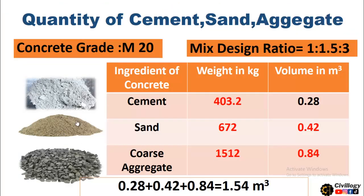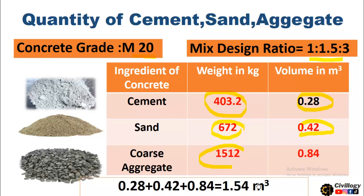At the end, let us summarize the whole topic. For M20 grade with ratio 1:1.5:3: cement is 403.2 kg with a volume of 0.28 cubic meters; sand is 672 kg with a volume of 0.42 cubic meters; and coarse aggregate is 1512 kg with a volume of 0.84 cubic meters. It depends on you whether you are calculating by weight or by volume — I have solved it in both forms, in kg and in cubic meters. If we sum the volumes: 0.28 + 0.42 + 0.84 = 1.54 cubic meters, which is the quantity of dry ingredients to make 1 cubic meter of concrete.